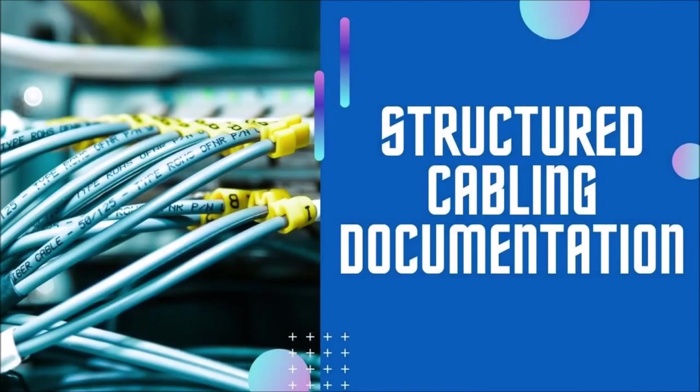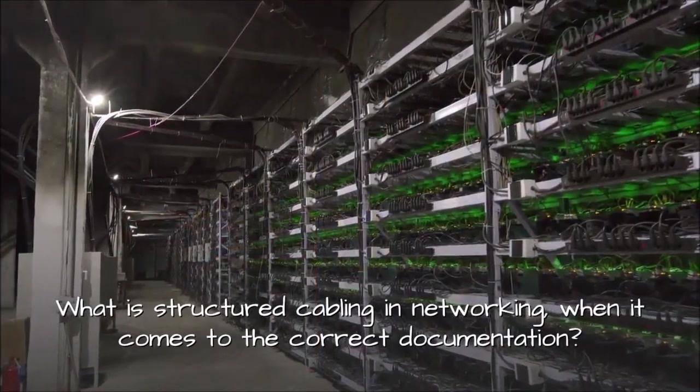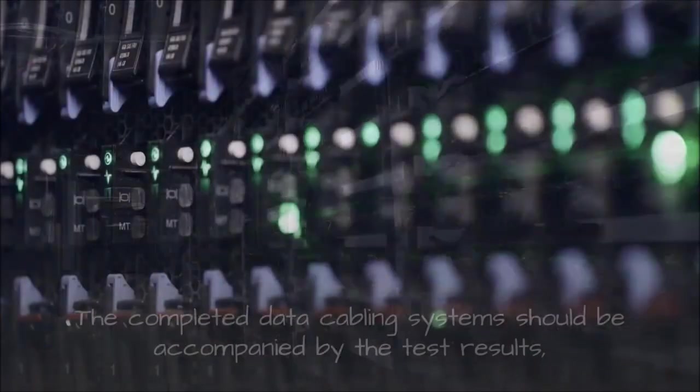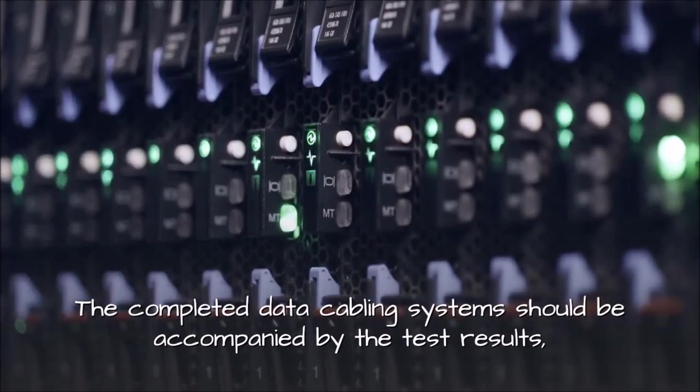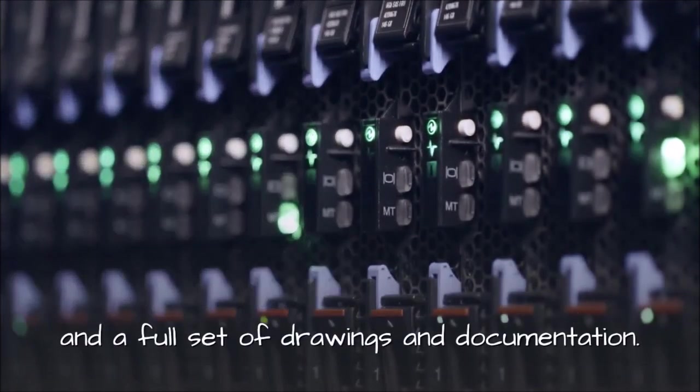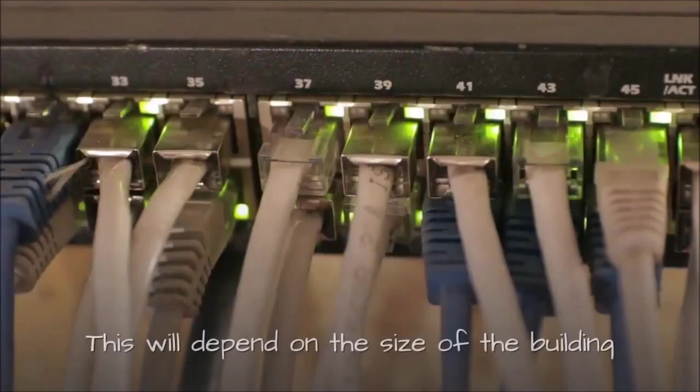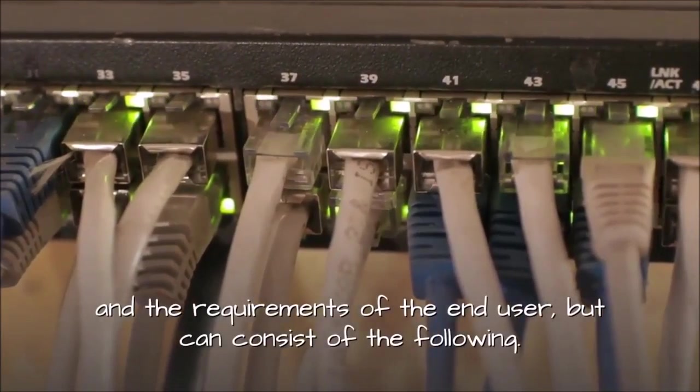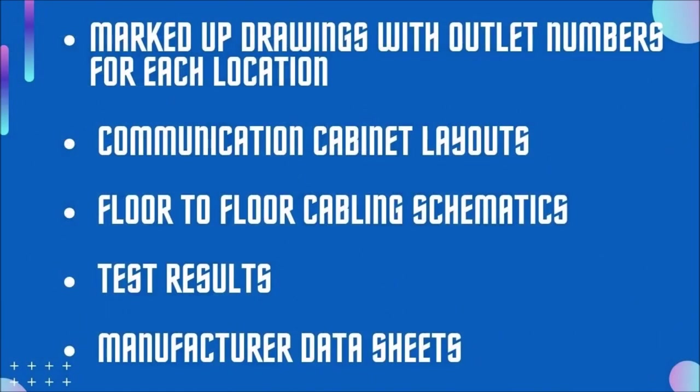Structured cabling documentation. What is structured cabling in networking, when it comes to the correct documentation. The completed data cabling system should be accompanied by the test results, and a full set of drawings and documentation. This will depend on the size of the building and the requirements of the end user, but can consist of the following: marked up drawings with outlet numbers for each location, communication cabinet layouts, floor to floor cabling schematics, test results, manufacturer data sheets.